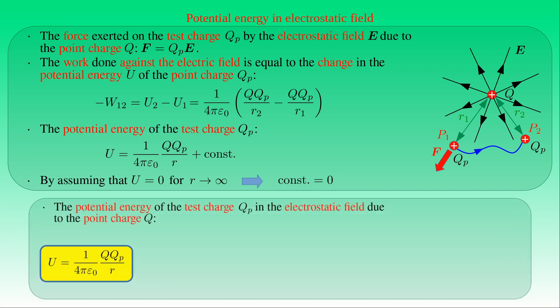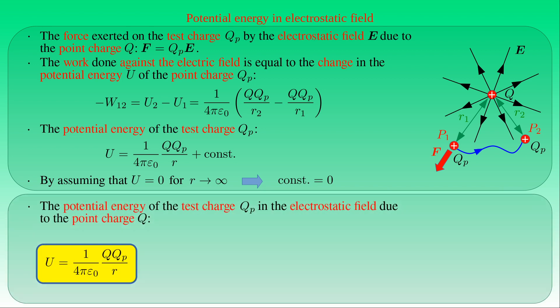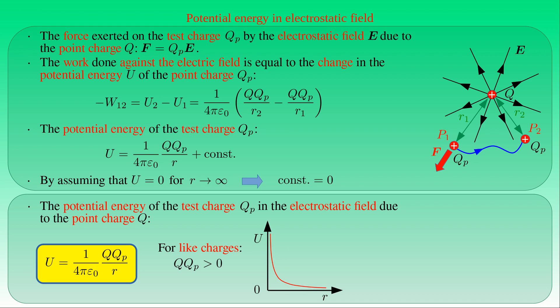This formula shows that the potential energy of the test charge is directly proportional to both the test charge and the point charge producing the field, and inversely proportional to the distance between them. For like charges (positive product Q·QP), potential energy is positive and increases with decreasing distance. For opposite charges, the product Q·QP is negative, giving a negative potential energy approaching zero as QP is brought infinitely far from Q.